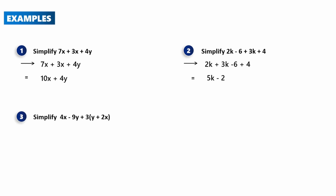Question 3: Simplify 4x − 9y + 3(y + 2x). We expand the brackets first: 3 × y = 3y and 3 × 2x = 6x. Then we group the like terms: 4x + 6x = 10x, and −9y + 3y = −6y. So the final answer is 10x − 6y. The key is to expand brackets first, then group like terms.